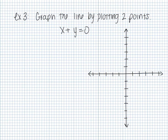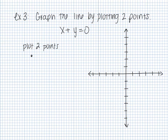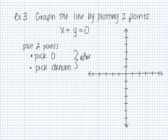The last example — Hawkes is going to make you plot the points on the graph yourself. I find the two points the same way as before: always pick zero first, then pick the denominator — but only after you've solved for y.